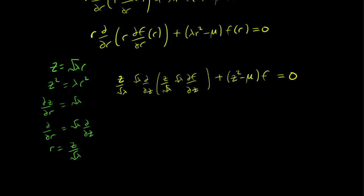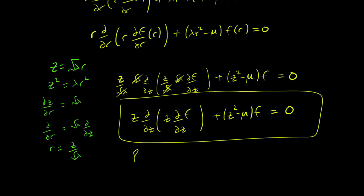We get z(d/dz)(z df/dz) + (z² - μ)f = 0. The lambdas cancel. This is the famous Bessel equation, and we will discuss how to solve this complicated equation in the next videos.